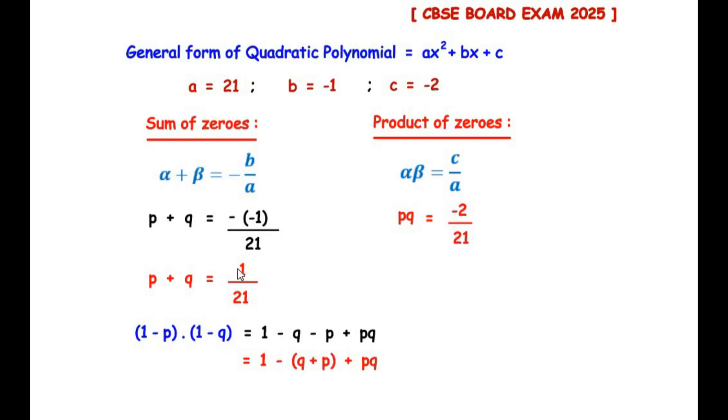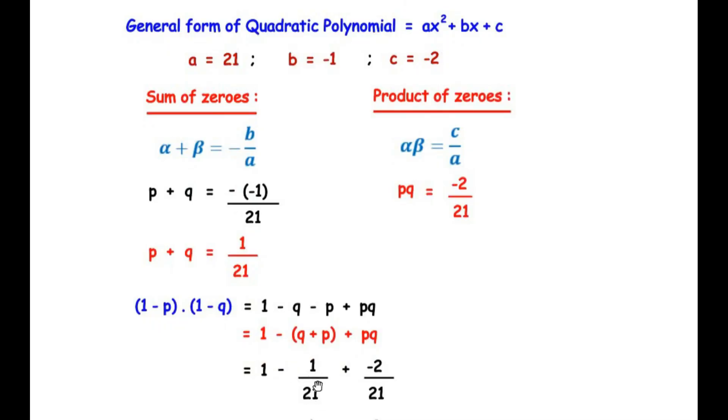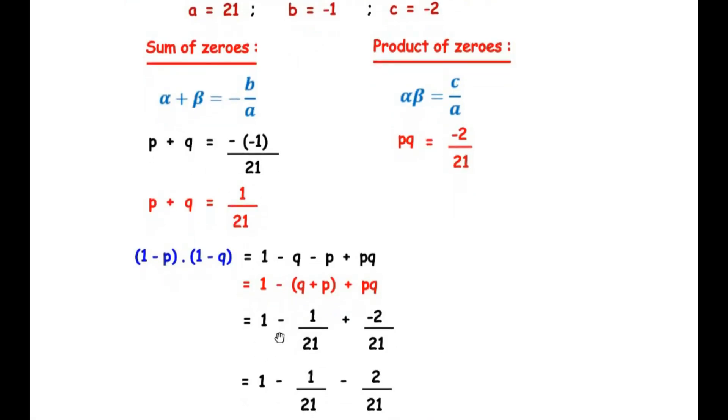So here we are going to replace it by 1/21 and in place of pq we are going to replace its value. So we have 1 - 1/21 + pq is -2/21. Now let us simplify this. So in the next step we have written 1 - 1/21, now plus times minus gives us -2/21.